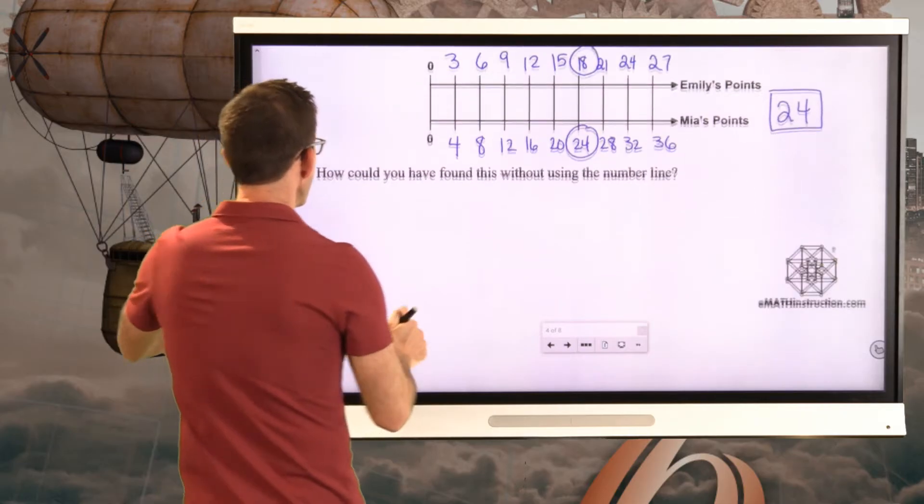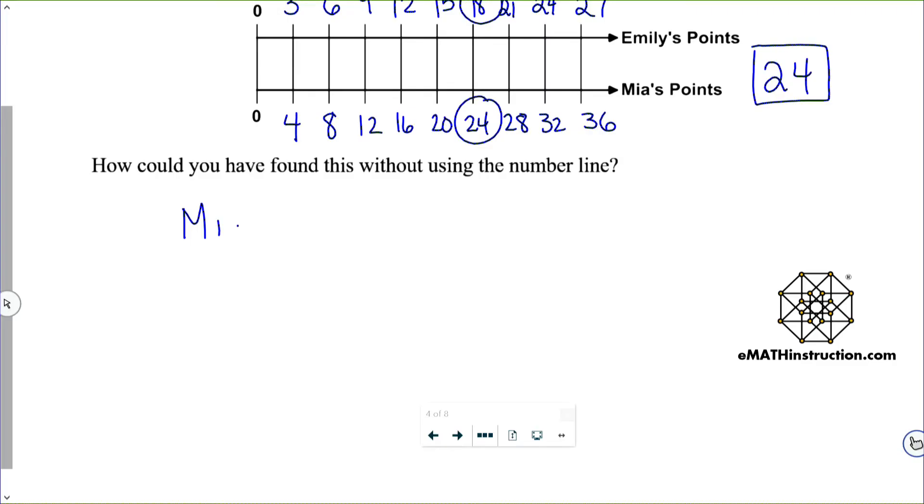What do we know? We know that Mia, 4 points. Emily, 3 points. And then what happens? Emily, we end up knowing, scores 18 points. And we want to know how many Mia scored.